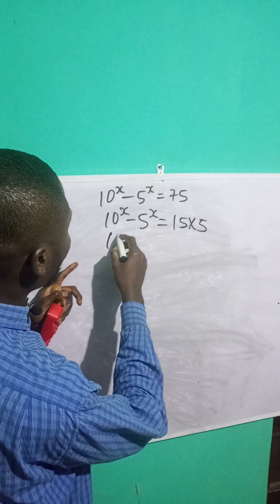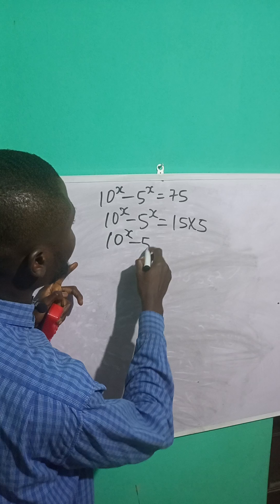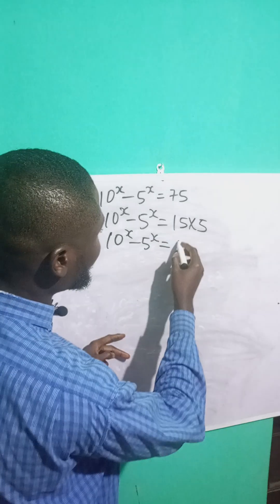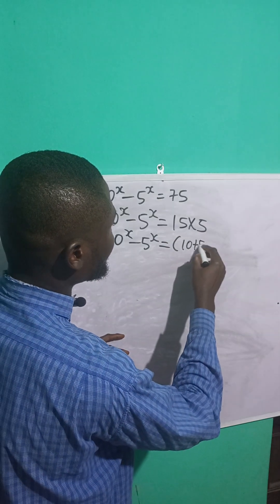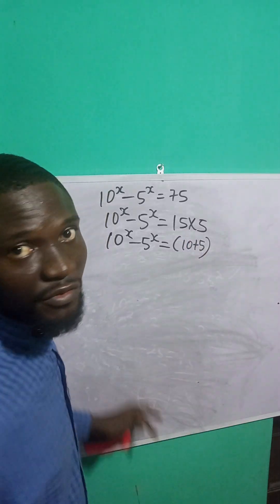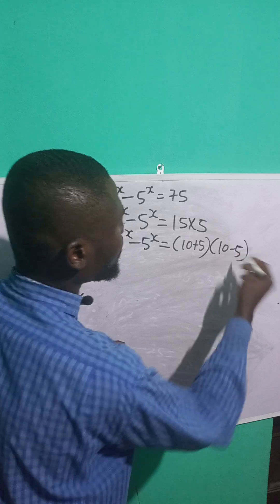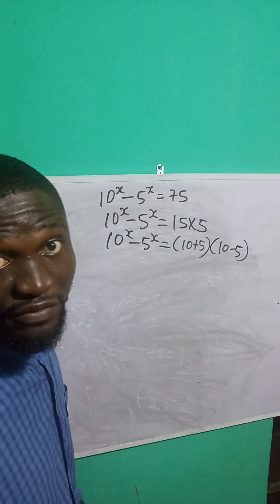So going further, I have 10 raised to the power x minus 5 raised to the power x is equal to, I can rewrite 15 as 10 plus 5. 10 plus 5 gives me 15. And this 5 I can write it to be 10 minus 5. 10 minus 5 gives me 5.